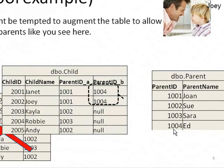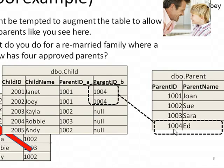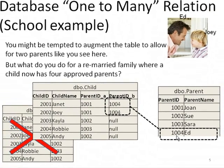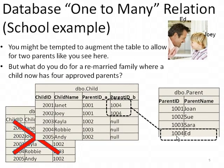You might be tempted to say: let's have a parent ID A and a parent ID B, and then look it up that way. That works for a little while. But what do you do for a remarried family where a child now has four approved parents?